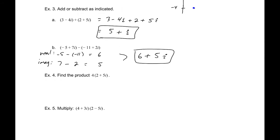Next, find the product: 4 times (2 + 5i). This works just like multiplying polynomials — we treat i like its own term and distribute the four: 8 + 20i. Just keep the real and imaginary parts separate and we're good to go.